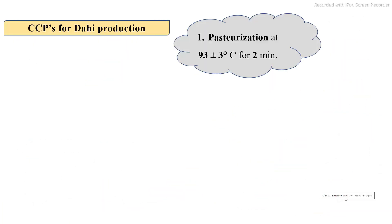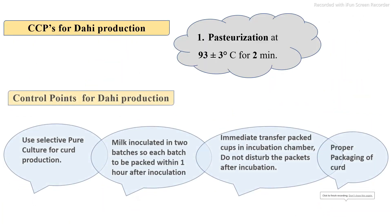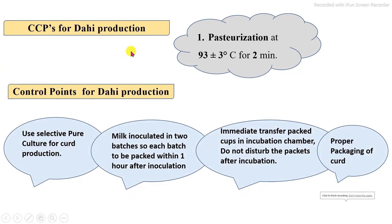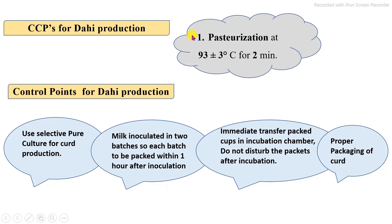The main critical control point in the curd production process is the pasteurization temperature, which is 93 plus or minus 3 degrees Celsius for 2 minutes — this is compulsory to control as a critical control point.